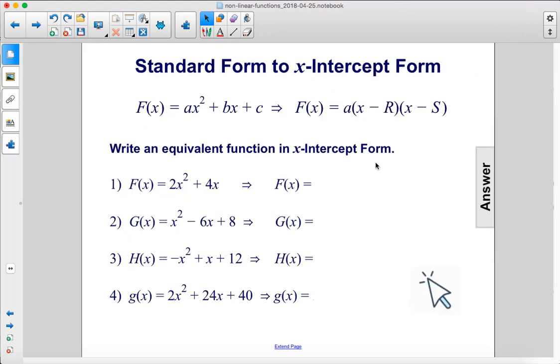Write an equivalent function in x-intercept form. First we can factor out 2x and we have 2x times x plus 2. Then we can rewrite it a little differently so that it's in the factored form here, x minus 0 instead of just x, so that 0 becomes r and 2 is s.